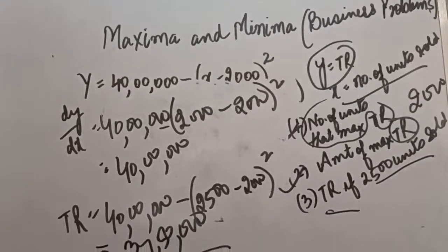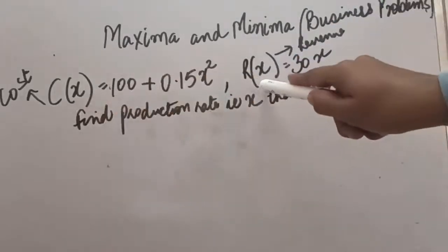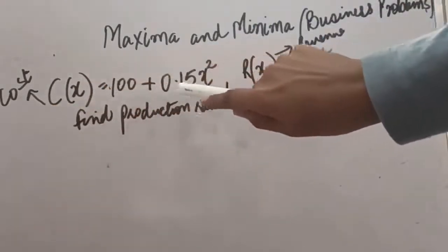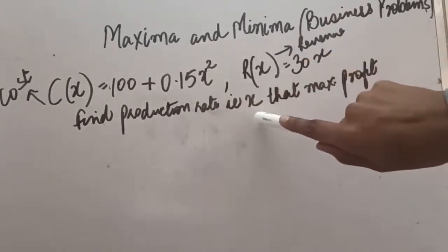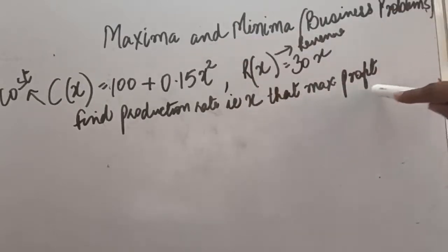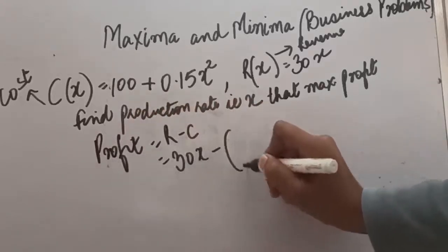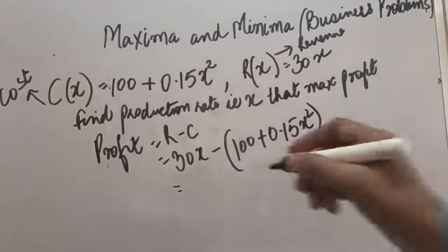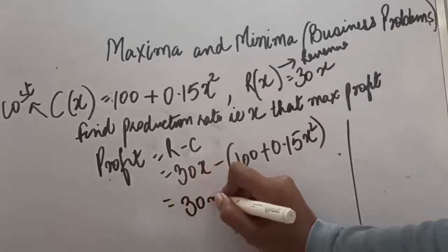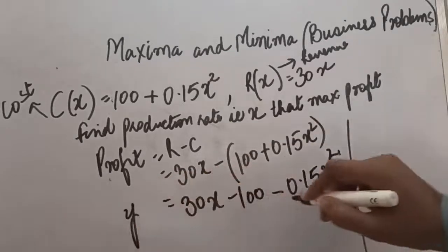This is how business problems can be solved with the maxima minima principle. Here is another example where cost C equals 100 plus 0.15x squared and revenue R equals 30x. We have to find the production level x that maximizes profit. The profit formula is revenue minus cost, so profit y equals 30x minus 100 plus 0.15x squared, giving y equals 30x minus 100 minus 0.15x squared.